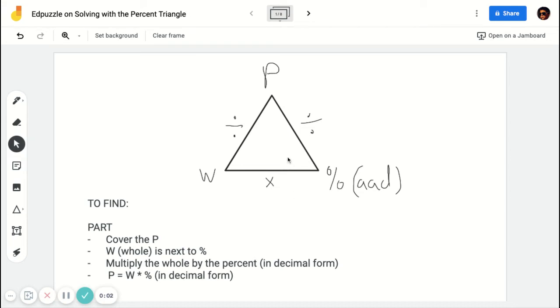Alright, so this is going to be an Edpuzzle on solving with the percent triangle. The percent triangle is just a fact family triangle where you're connecting the part, the whole, and the percent in a family. And they're connected by either division or multiplication.